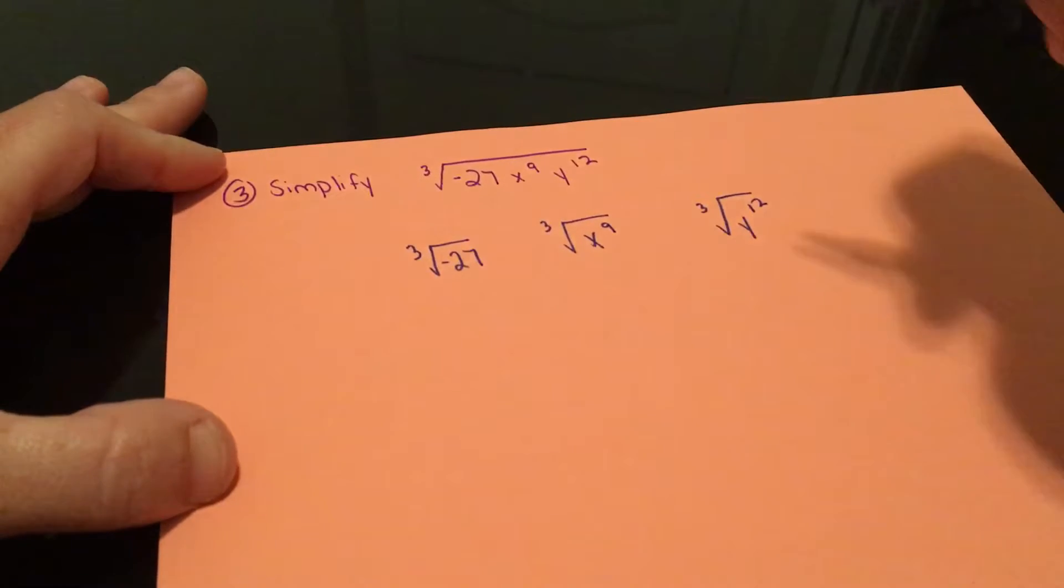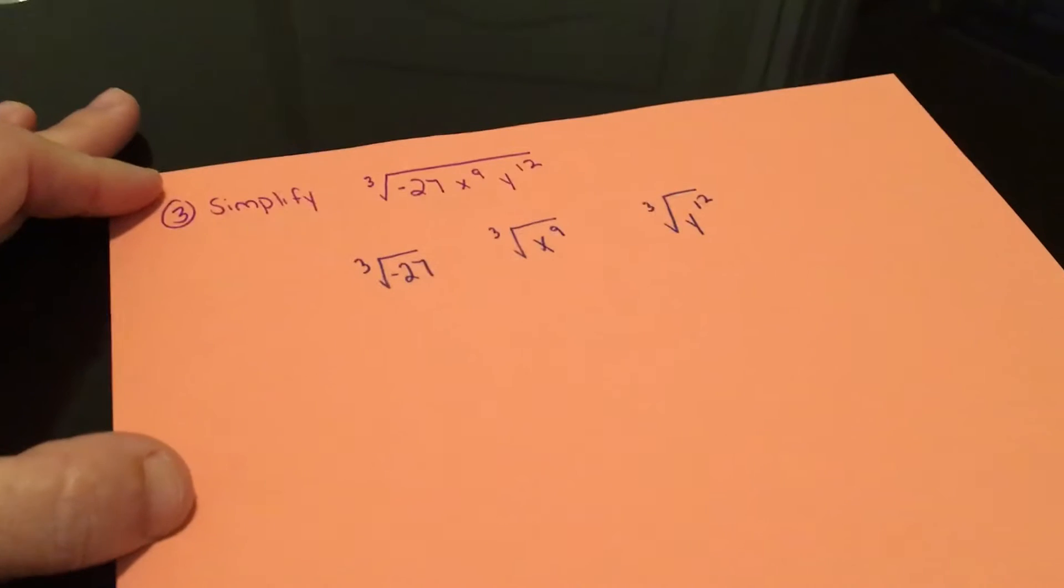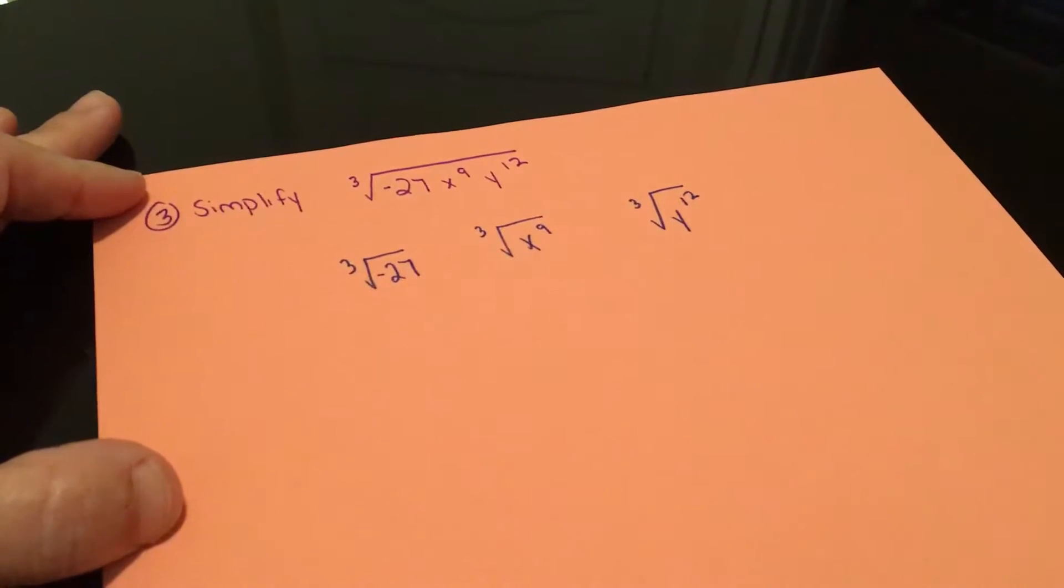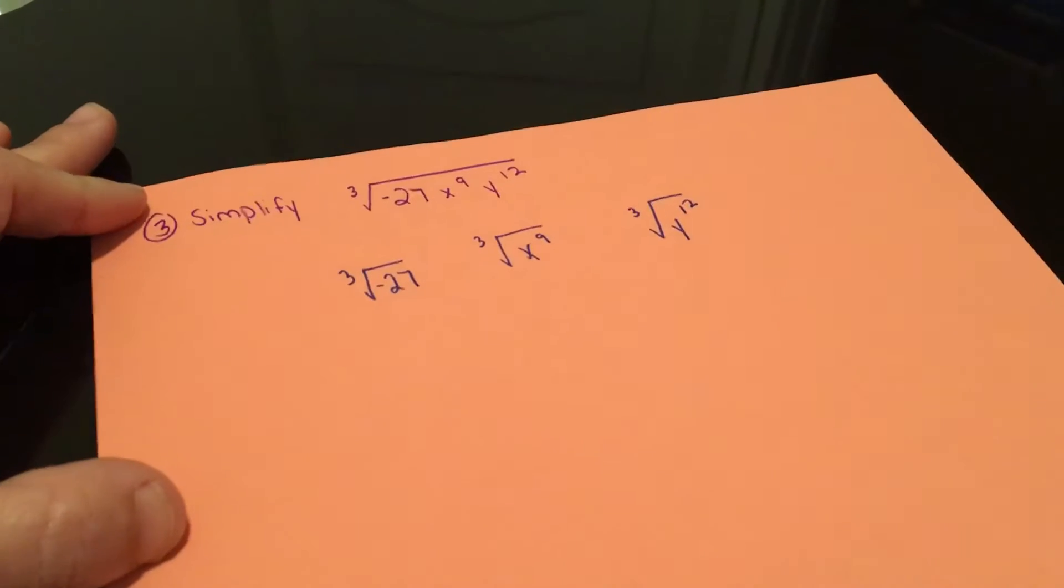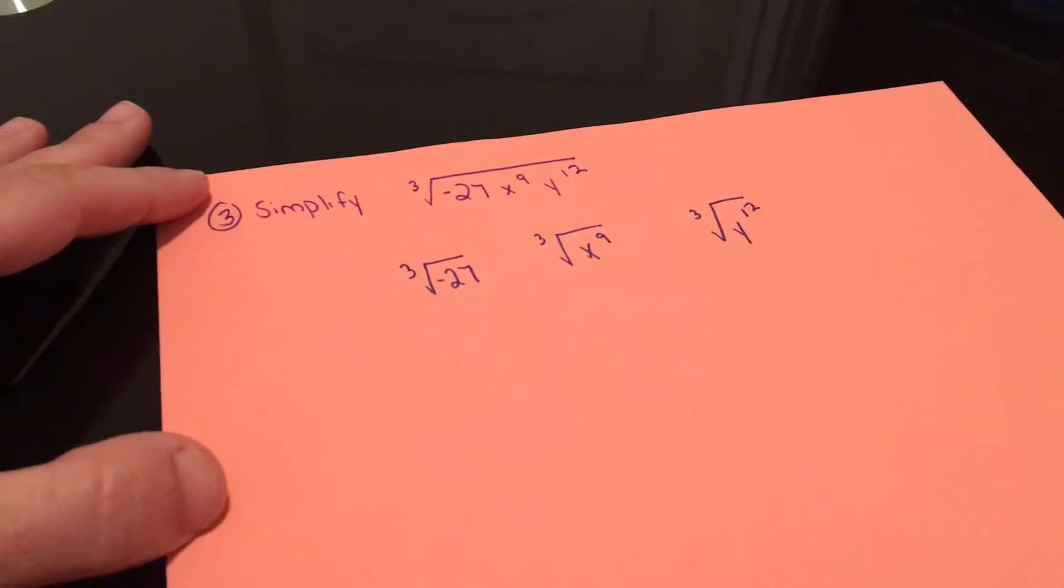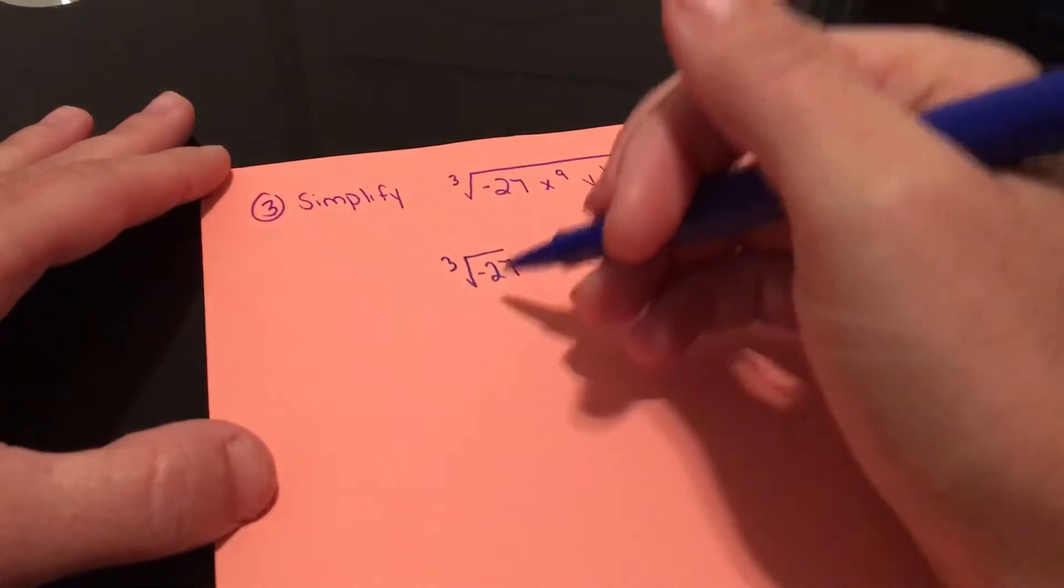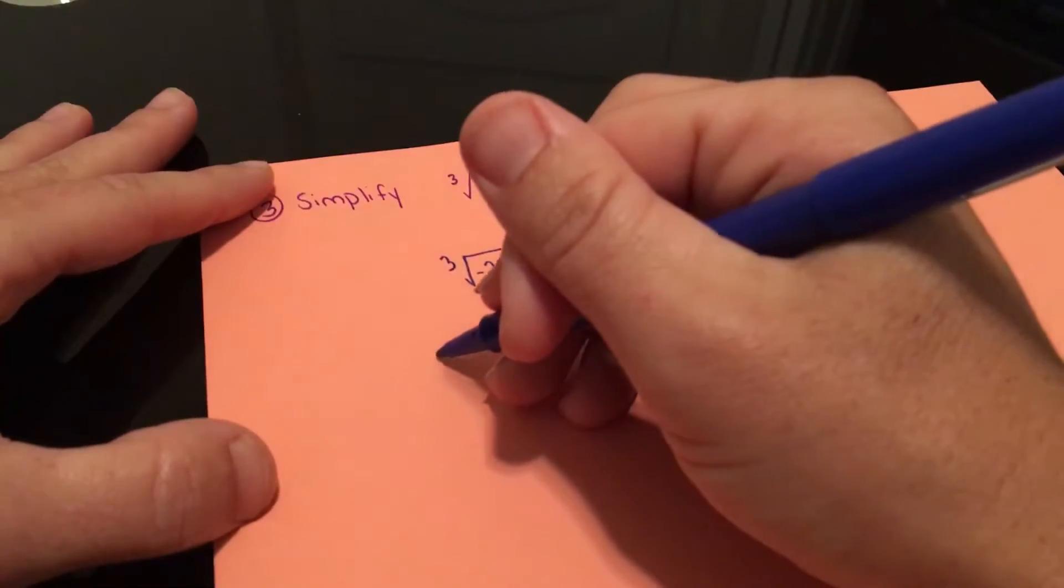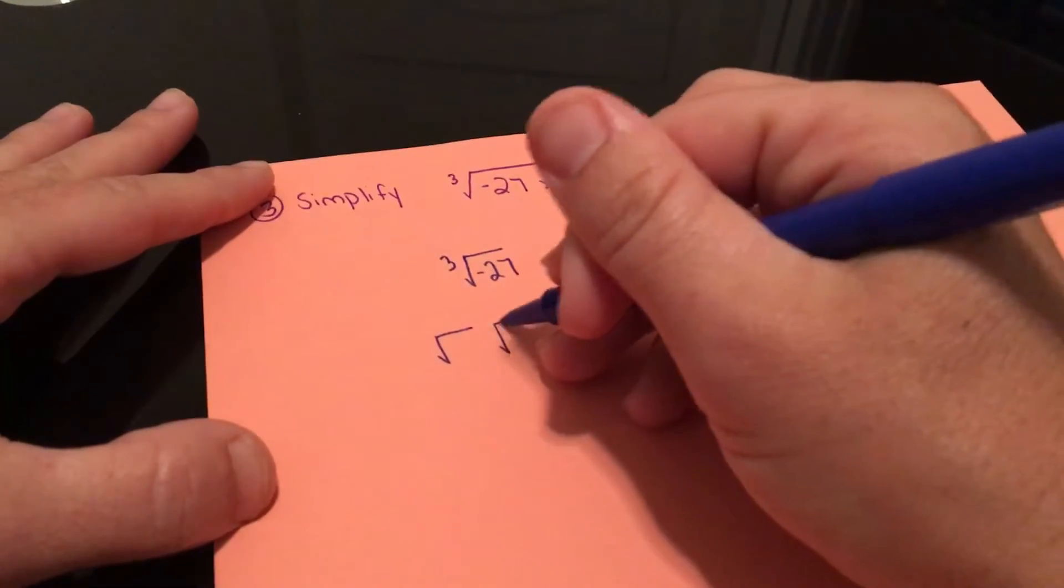The cube root of negative 27. I know you're taught to think that you can't take the square root of a negative, which is true, but this isn't a square root. This is a cube root, which means it's being multiplied 3 times here. So it's not even numbers. When you think about this, this is 3 times.